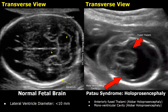The most common abnormality associated with Patau Syndrome is holoprosencephaly. In this abnormality, the cerebral hemispheres of the fetal brain fail to divide into two separate cerebral hemispheres. It is a very severe and serious anomaly. Instead of two separate cerebral hemispheres, a small, abnormally developed brain tissue is seen. The most serious form of holoprosencephaly is alobar holoprosencephaly. In this type, the brain tissue completely fails to divide into two separate cerebral hemispheres.